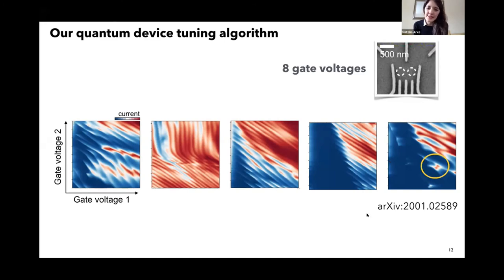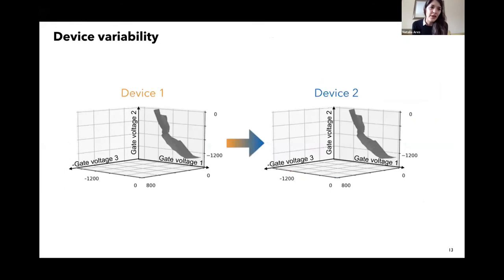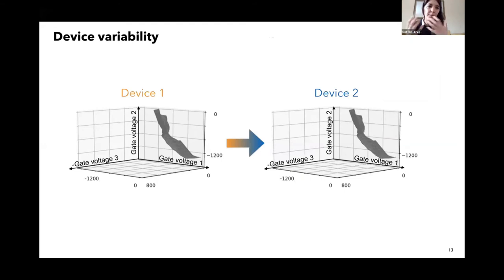For more details, please look at the paper. We managed to do this completely automatically in 17 minutes, which we believe is great. Something else this algorithm lets us do — because now we have a model of the epo-surface and some measurements about it — is to compare the epo-surfaces of different devices, and in this way quantify device variability.